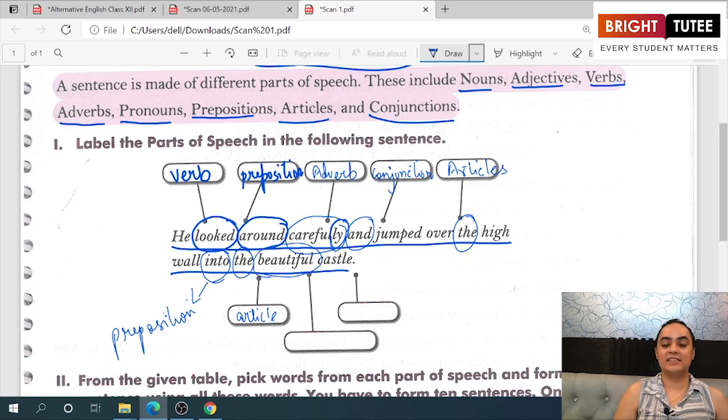'Beautiful' is describing a castle—a describing word. So this word is known as an adjective. 'Castle' is a thing, a name of a place that we are describing. So a name word is a noun.